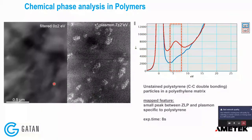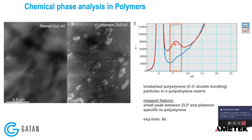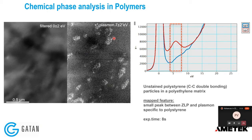Another example uses polymers or carbon-based materials. Here we have polyethylene as the matrix with polystyrene precipitates. Everything is made of carbon and hydrogen, making contrast in a TEM image very complicated. However, in polystyrene the carbon atoms are double-bonded, so you have an interband transition that is pretty strong around 7 eV. By collecting only electrons around 7 eV, you get a good contrast image showing all the polystyrene precipitates — and this was all done in about 8 seconds.